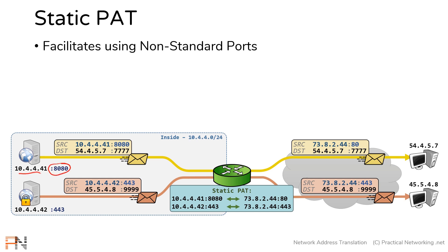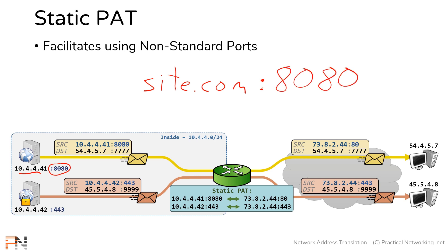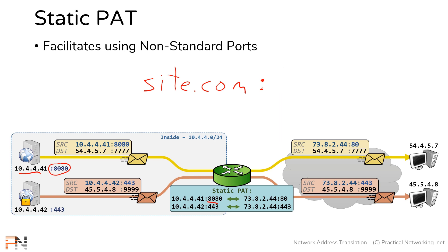Port 8080 is a non-standard port. If this was a web server hosting on port 8080, a user would have to type site.com followed by colon 8080 to access it in a browser — and most users would typically forget that part. You can make this easier by creating a static PAT so that any request to port 80 automatically gets redirected to port 8080 on your web server. Since port 80 is the standard default port for web traffic, users only need to type site.com and the browser automatically makes the request to port 80.